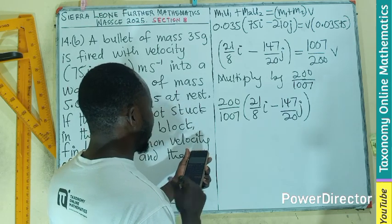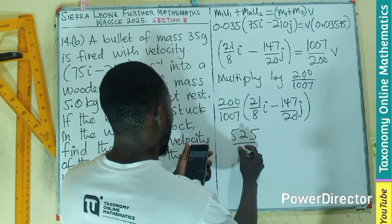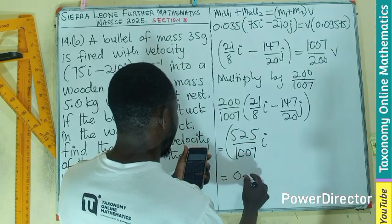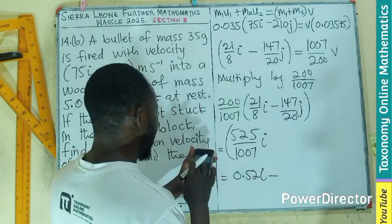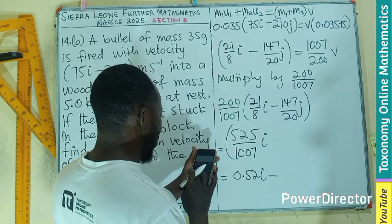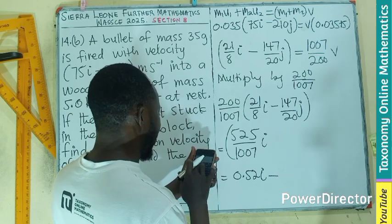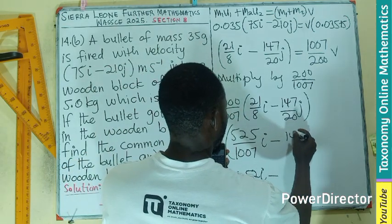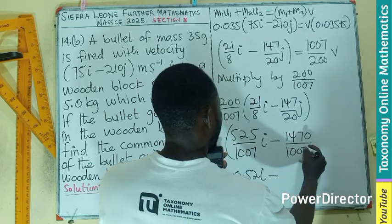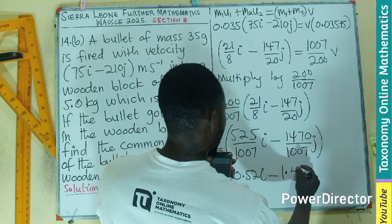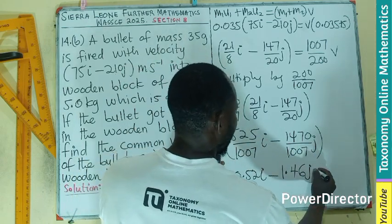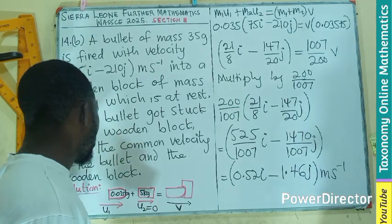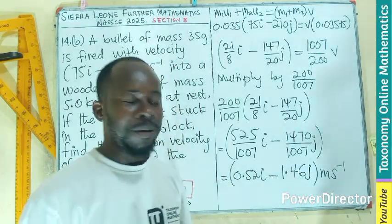This gives us 525/1007 i, which in decimal form is approximately 0.52i, minus 1470/1007 j, which in decimal form is approximately 1.46j meters per second. So the common velocity of the bullet and the wooden block is 0.52i minus 1.46j meters per second.